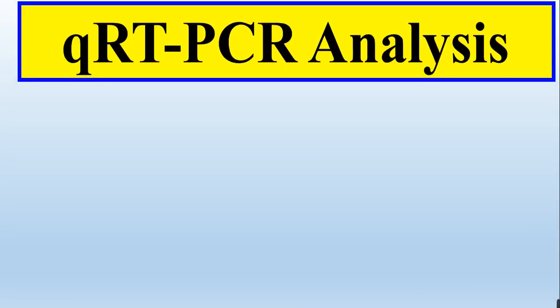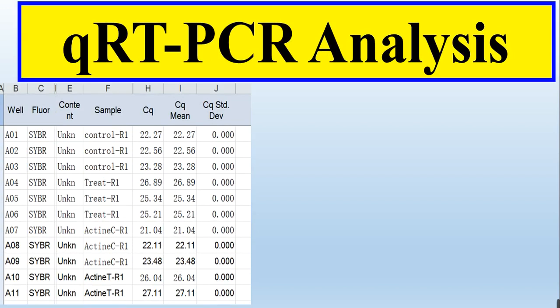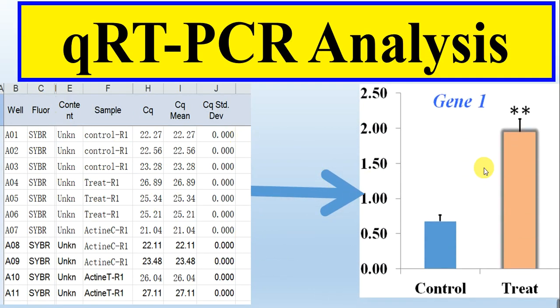In this video we will talk about how we can do the qRT-PCR analysis from the Cq Excel sheet — the Cq value — and convert them into a bar chart graph, and apply a t-test to determine whether the results are significant or non-significant.